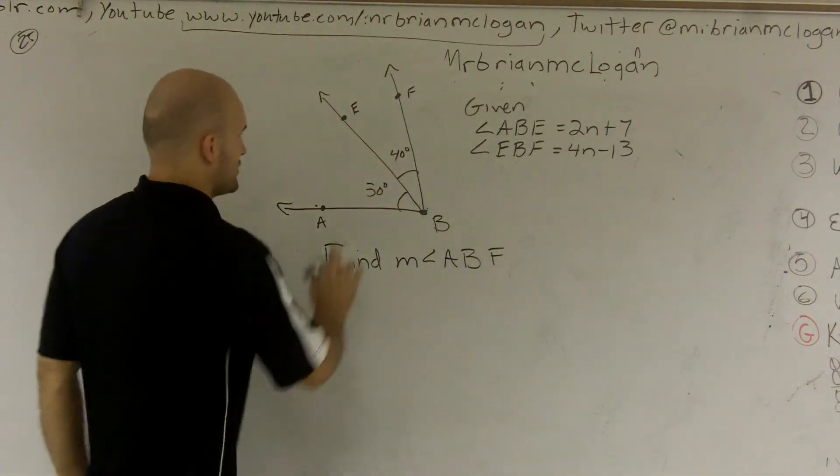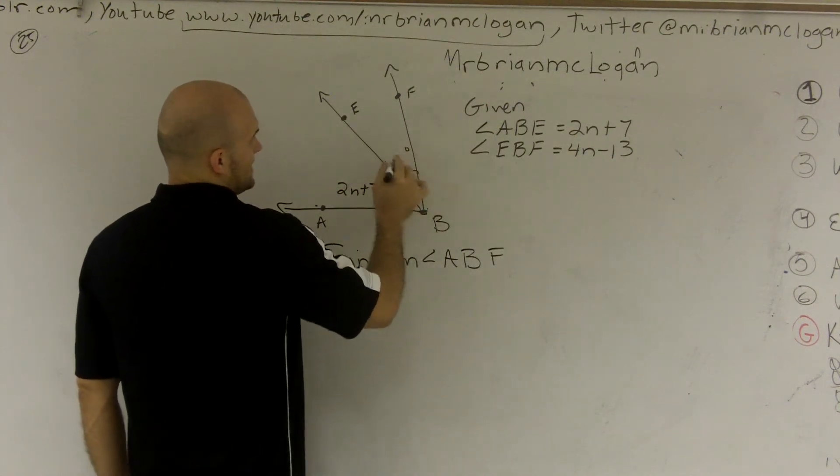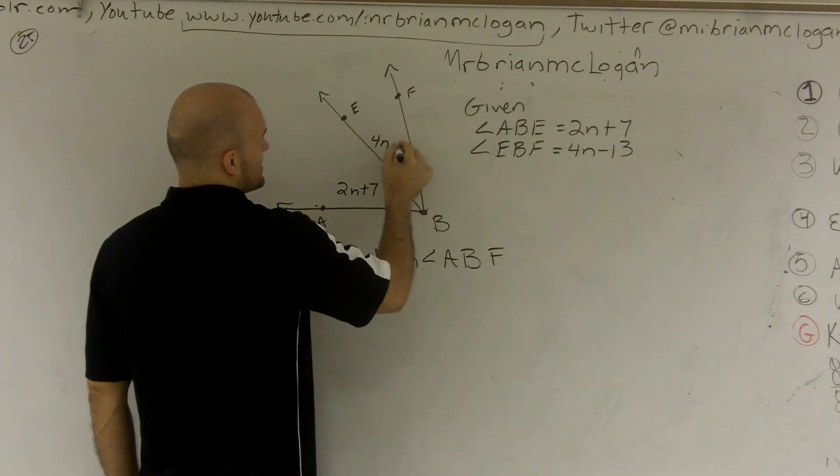A, B, E does not equal 30 degrees. It now equals 2N plus 7. And EF equals 4N minus 13.